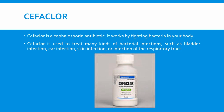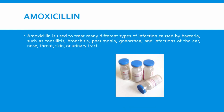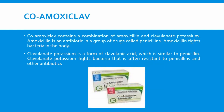Amoxicillin is used to treat many different types of infections caused by bacteria, such as tonsillitis, bronchitis, pneumonia, gonorrhea, and infections of the ear, nose, throat, skin, or urinary tract. Co-amoxiclav is a combination of amoxicillin and clavulanate potassium. Amoxicillin is an antibiotic in the penicillin group that fights bacteria in the body, while clavulanate potassium is a form of clavulanic acid — similar to penicillin — that fights bacteria often resistant to penicillin and other antibiotics.